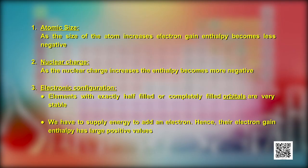Can you tell why noble gases have positive electron gain enthalpy? The atoms of these elements have completely filled subshells. As a result, there is no room in their valence orbitals and the additional electron has to be placed in an orbital of the next higher shell. As a result, energy has to be supplied to add an additional electron.